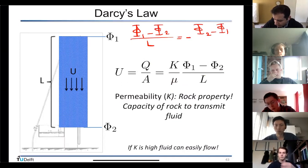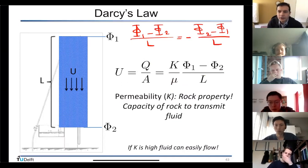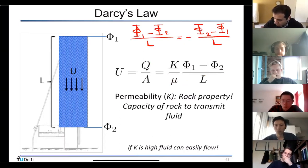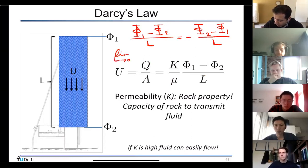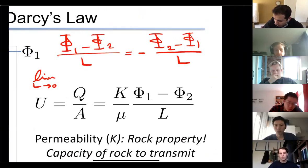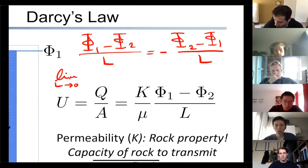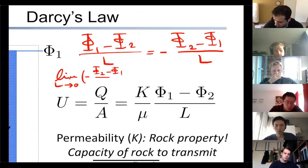In the limit as L goes to zero, the factor −(φ₂ − φ₁) / L tends to the gradient dφ/dz. There is a negative sign, so this is the slope of the potential function. For discrete points 1 and 2, it becomes (φ₂ − φ₁) / L with the negative sign.